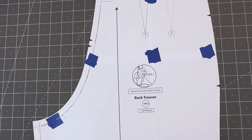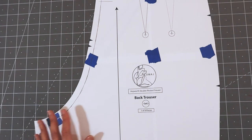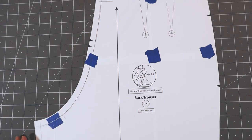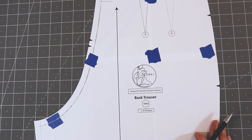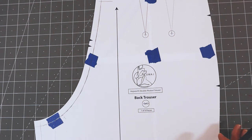Now that we have all of our measurements, we'll start by applying them to a crotch increase. In this example, we'll say that the crotch length of my pattern is 26 inches and my personal crotch length is 27 inches. So we'll apply the difference of one inch to increase the length of the crotch on this pattern.